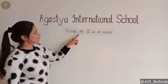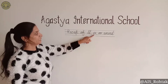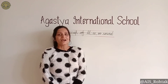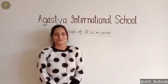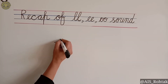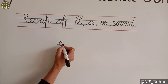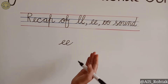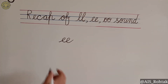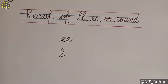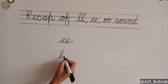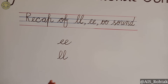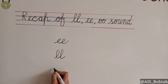Today we will do a recap of LL, EE, and OO sounds. As we know, these are the long sounds. So we will learn how to frame words with these long sounds. We know E says its short sound, but when it comes two times — double E — it will make a long sound. Same way, L says its short sound, but when it comes two times it will make a long sound.